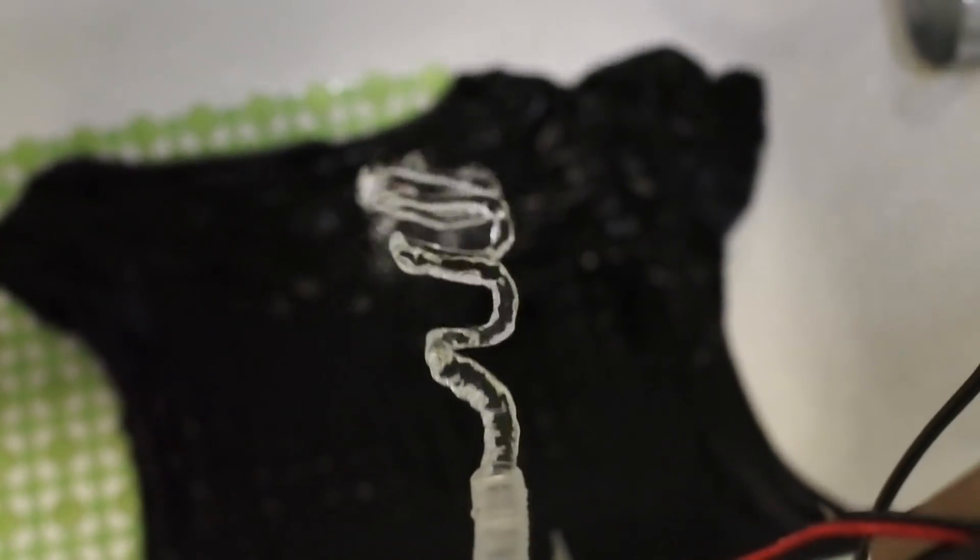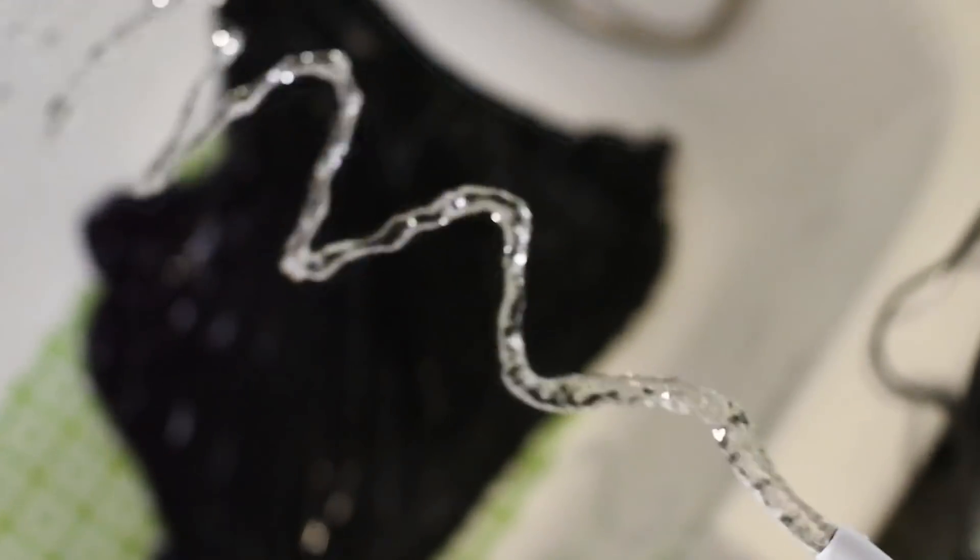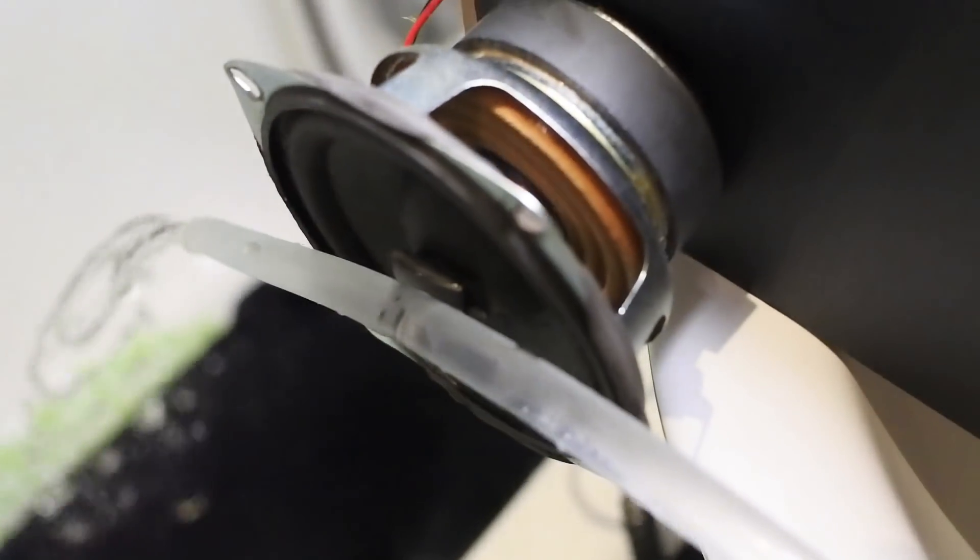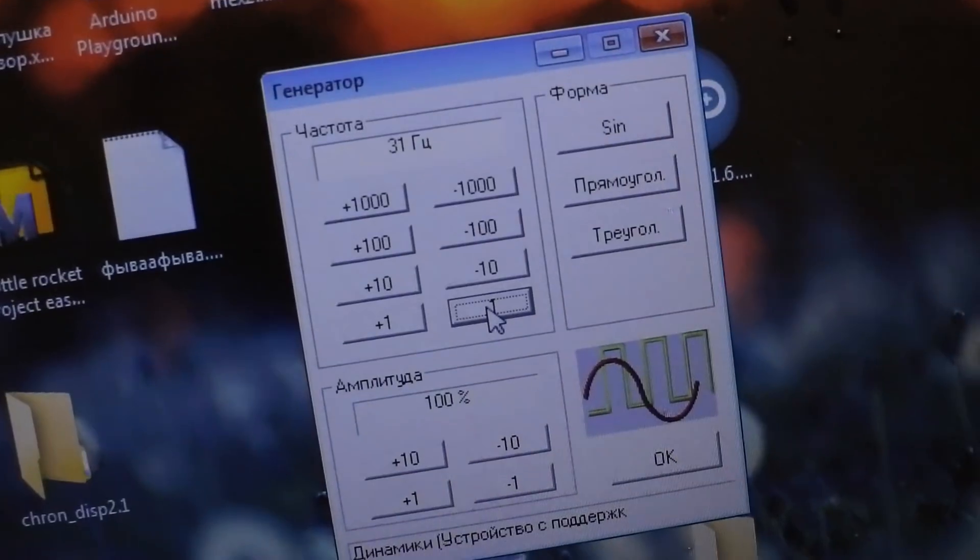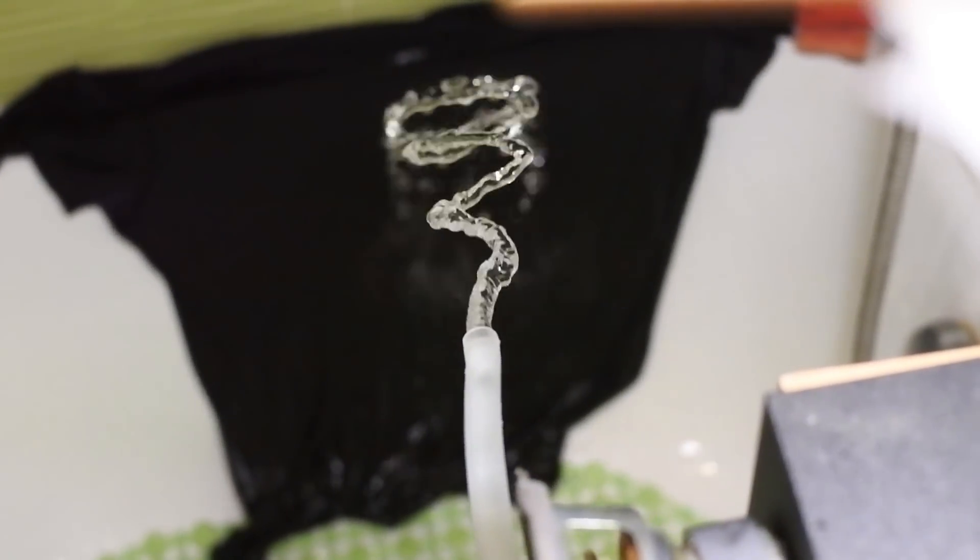My camera is recording 30 frames per second, and if I set the same frequency, camera will capture the same position of water in each frame. But if I tune frequency a little, the water will start flow in or out the tube. Incredible!